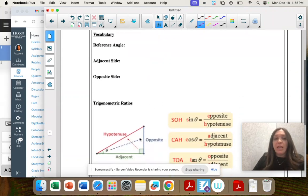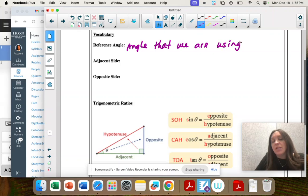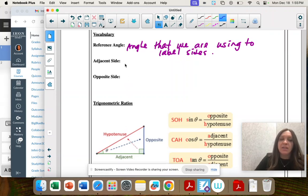When we're labeling a triangle, we start with the reference angle, and that's the angle that we're looking at, the angle that we're using to label sides. Then we always start with the hypotenuse, that's the one across from the right angle. And then the adjacent side is the side next to the angle. Adjacent means next to. It actually helps create the angle.